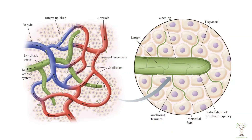Let's look at how lymphatic vessels take up extra interstitial fluid. Here we have a capillary network where arterioles bring blood in and venules take it away, with tissue cells in between surrounded by interstitial fluid. The vascular system is leaky, and fluid leaves the capillaries to bring nutrients and oxygen to cells. Some of that excess fluid gets taken back up by the capillary beds, and the rest is taken up by lymphatic vessels. Lymphatic vessels differ from capillaries — they are closed-ended vessels made of endothelial cells but with small openings. When fluid enters and pressure increases, those openings close so the fluid cannot flow back out into the tissue.